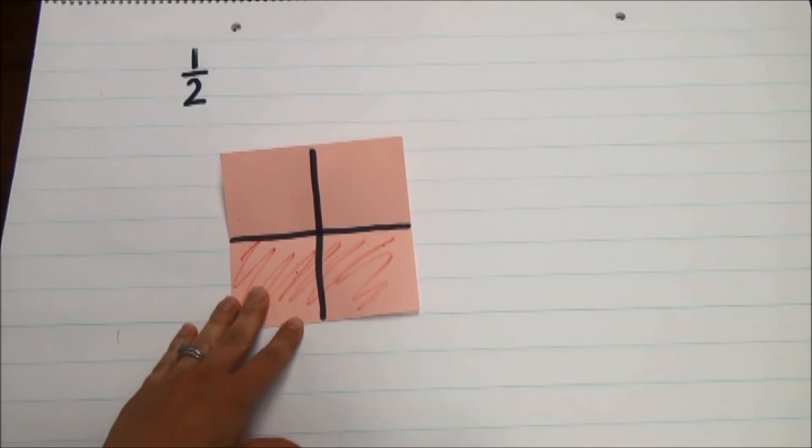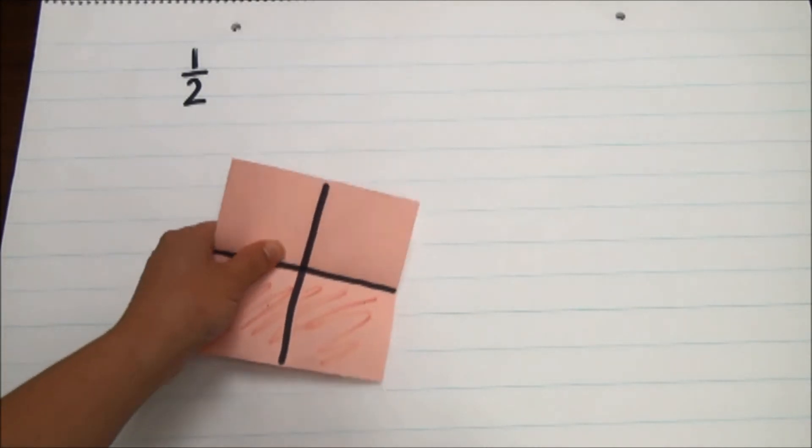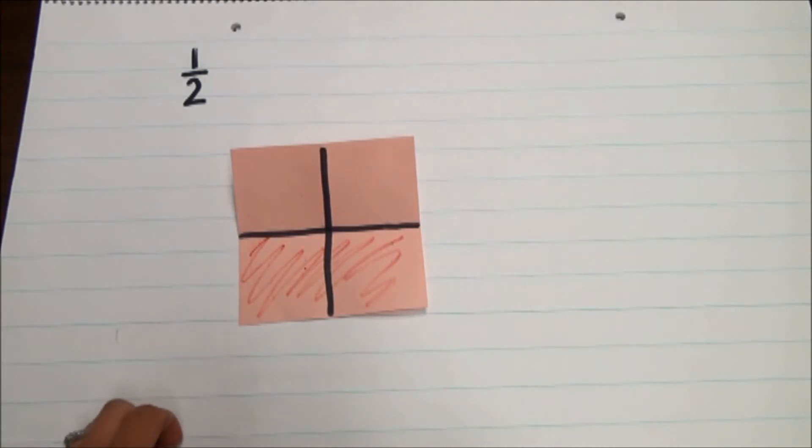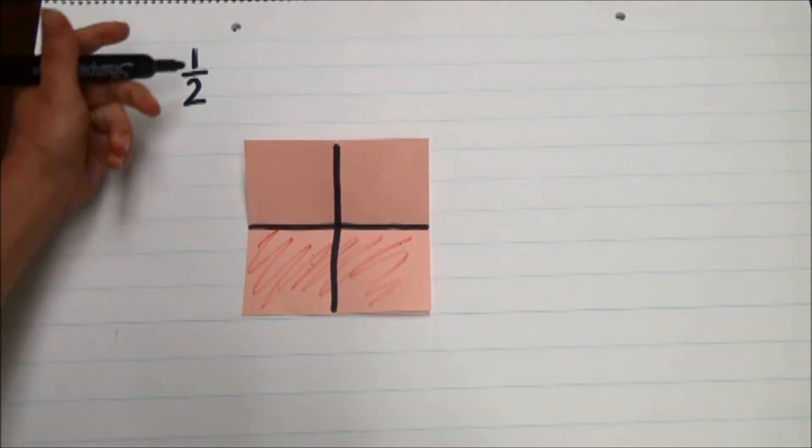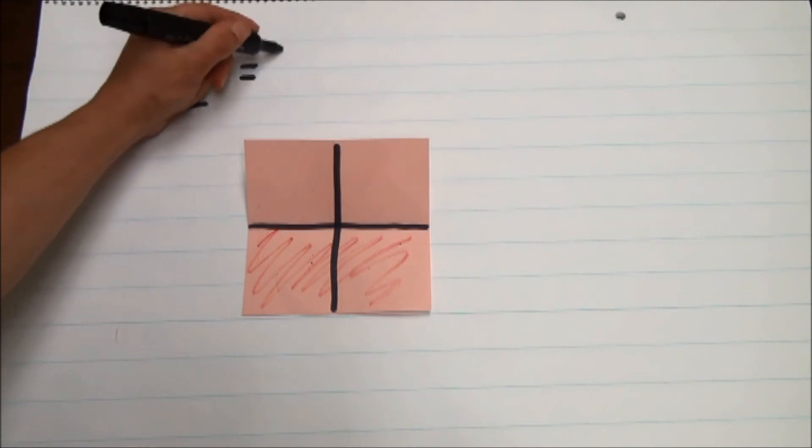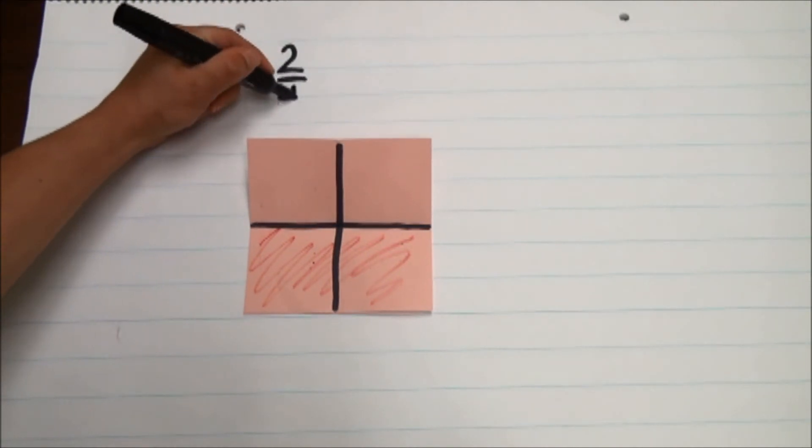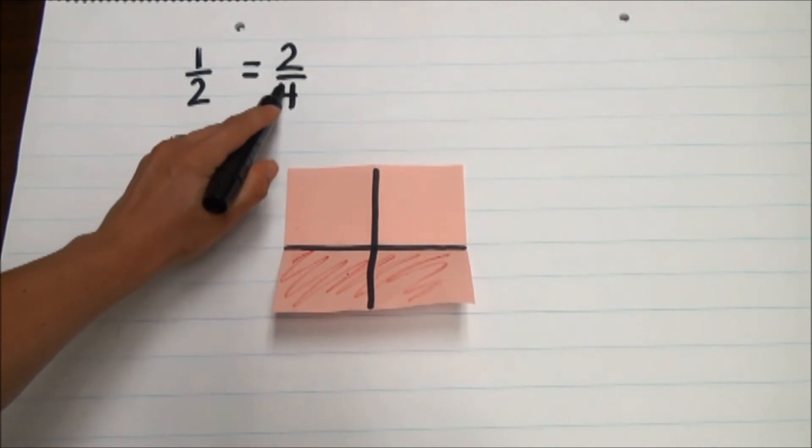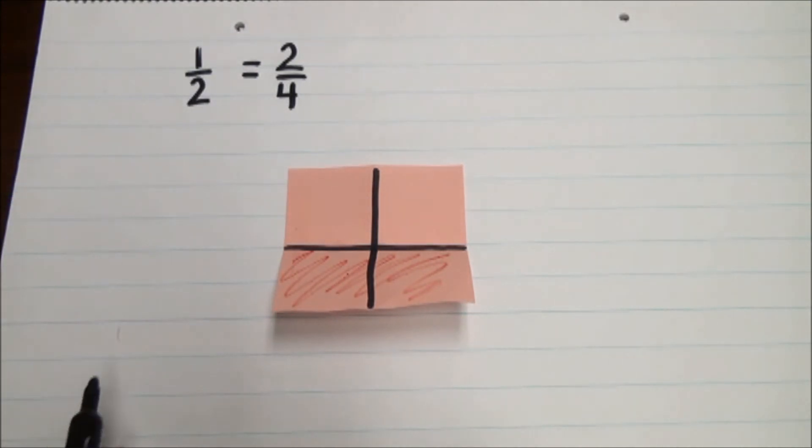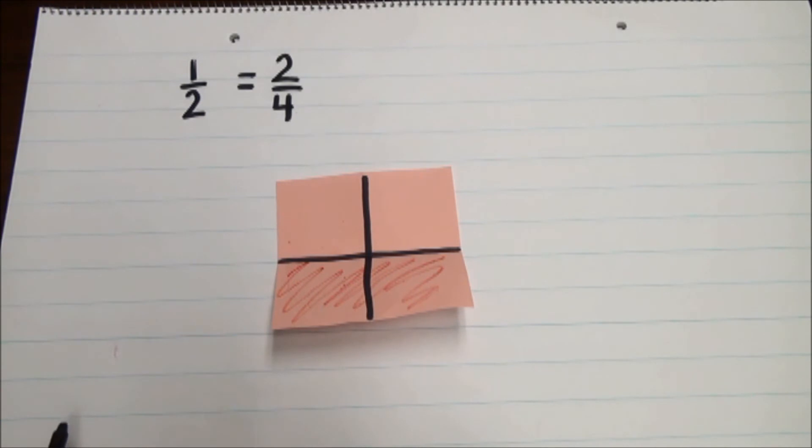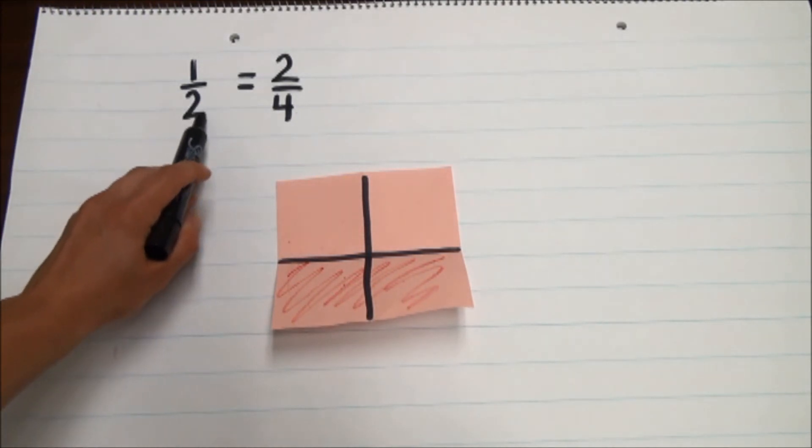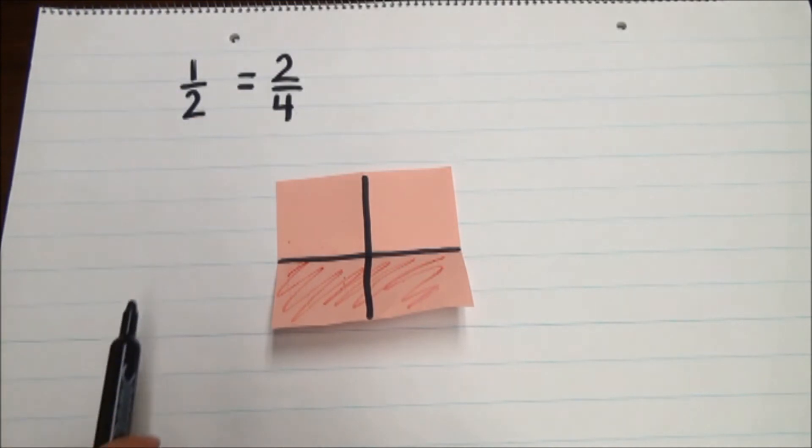The students would come to the conclusion that the only thing that changed was the extra fold. When we did the extra fold, now all of a sudden we have a different number of total pieces. We just doubled the number of total pieces and we doubled the pieces that were colored. So I would say to students, okay, so what you're telling me is that since we didn't do anything or change anything, that two-fourths is really the same amount as one-half. So what you did was you told me that two-fourths is equivalent to one-half. Then we would also post this fraction on the number line. Since this fraction is the exact same amount as one-half, I would just hang it at the same spot as one-half.